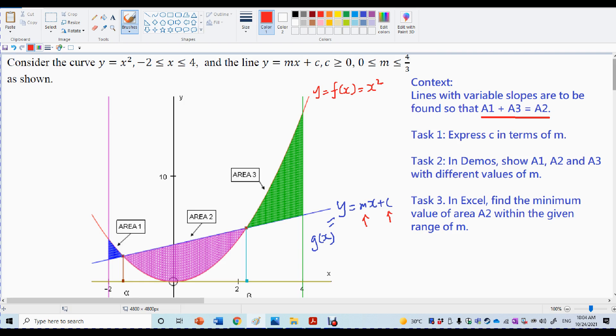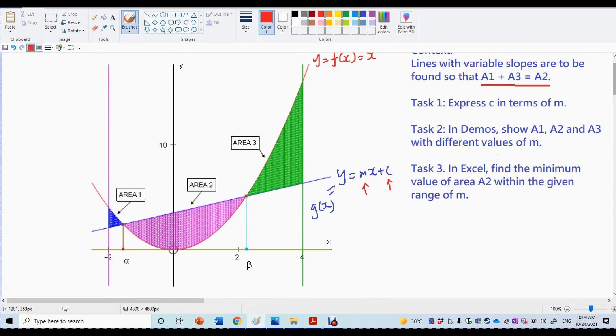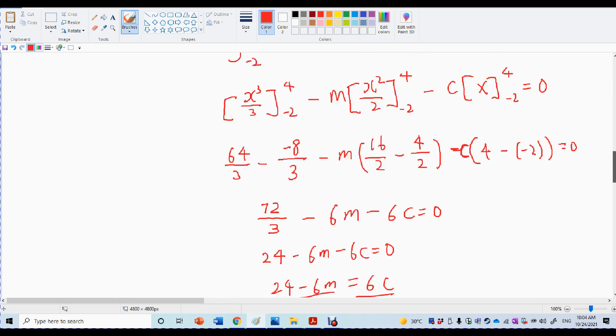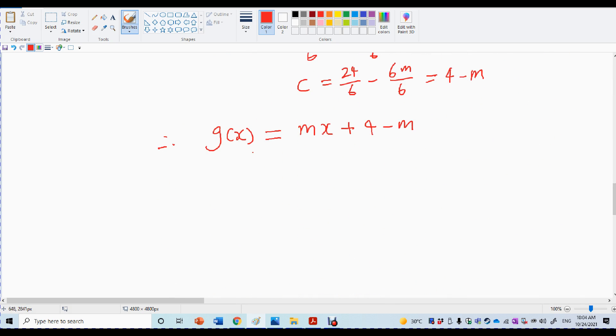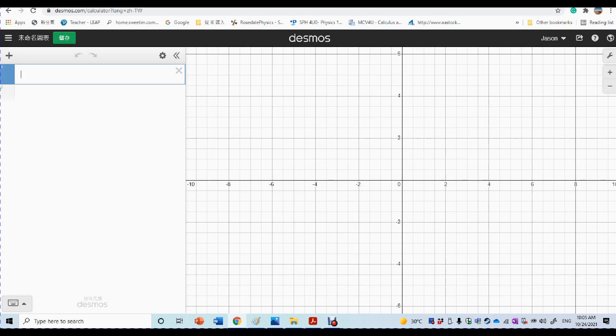And now in task 2 we try to show you how can we use Desmos to find all these areas with different values M. So remember the equation of straight line right now is Mx plus 4 minus M. Let's go to the Desmos. So here's our Desmos.